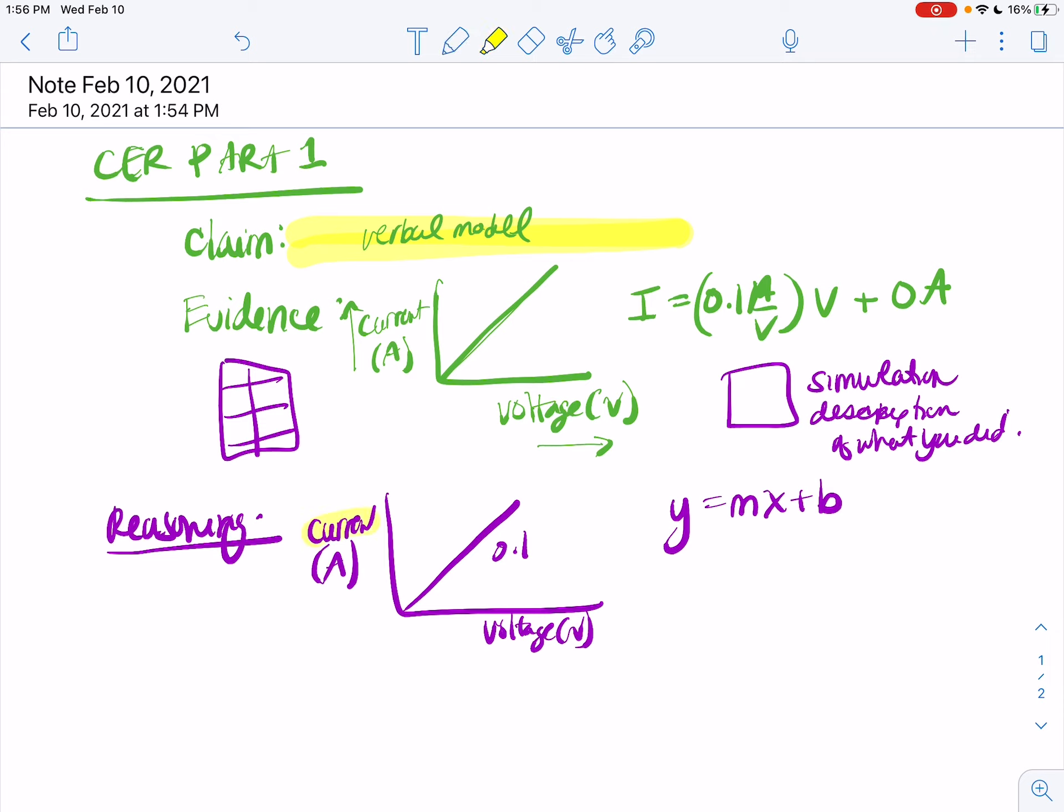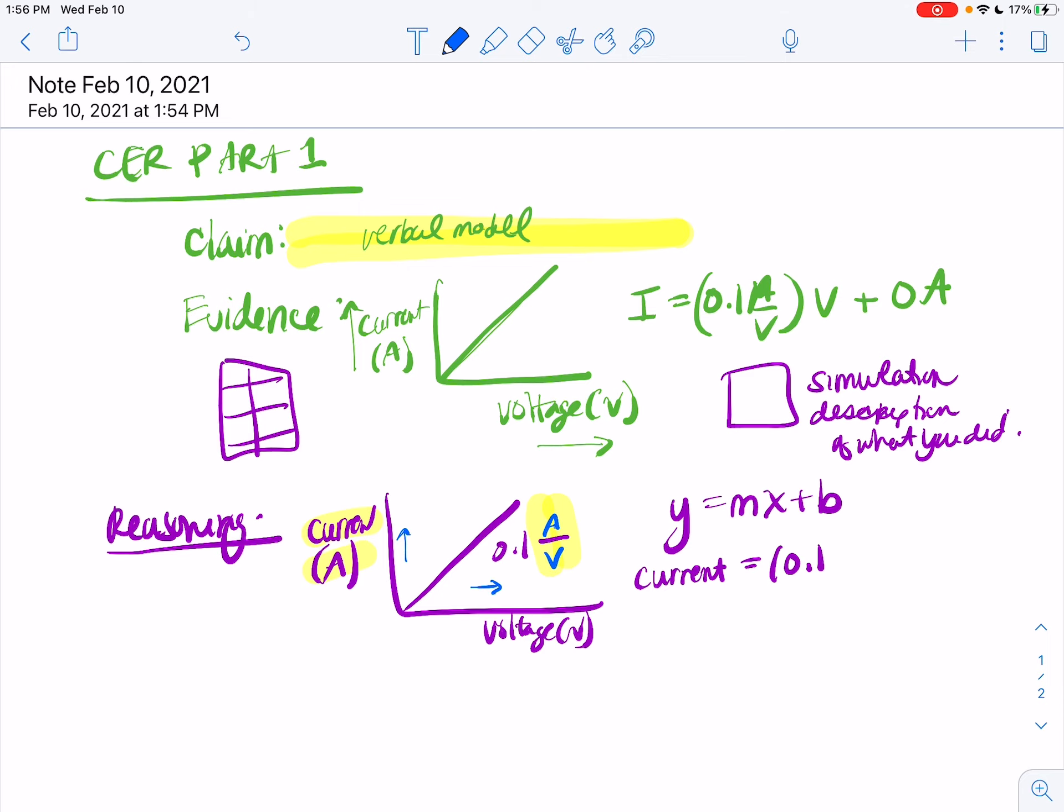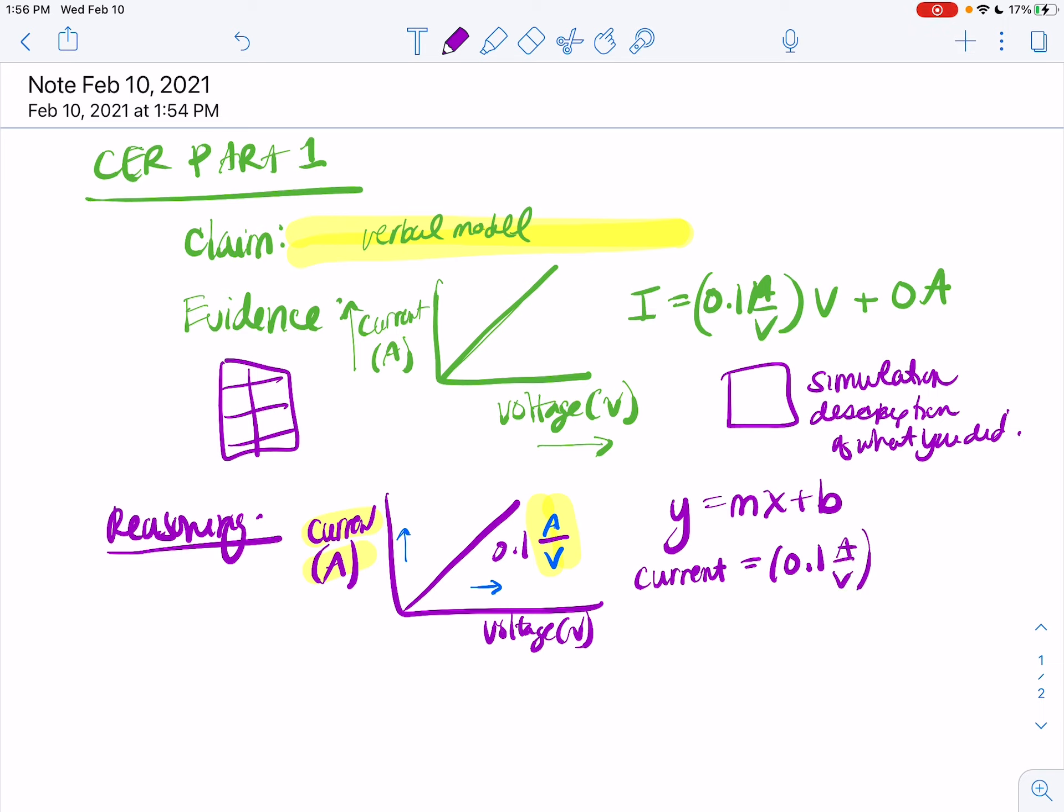The y variable is the current. Your slope is 0.1, and then we need units on the slope because remember the slope is going to be rise over run. So my rise unit is amps, my run unit is volts. So this is going to be amps per volt times the x variable which is voltage. Plus my y-intercept right here is 0 volts, 0 amps. So this is going to be 0 amps.